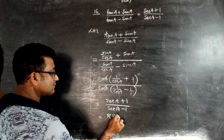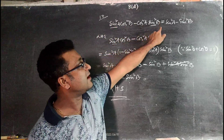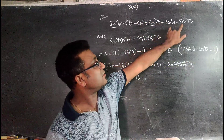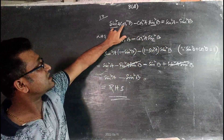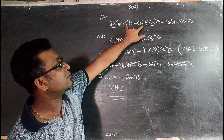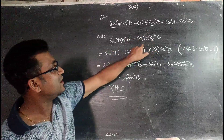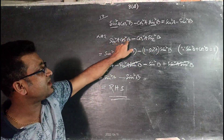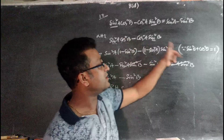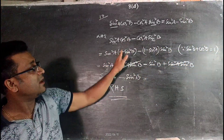Question number 17: prove sin²Acos²B - cos²Asin²B = sin²A - sin²B. In the right hand side only sine terms appear, so we keep sin²A and sin²B as they are and convert cos²B and cos²A. Using sin²θ + cos²θ = 1, we substitute cos²B = 1 - sin²B and cos²A = 1 - sin²A.